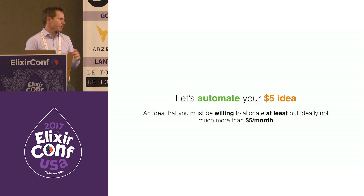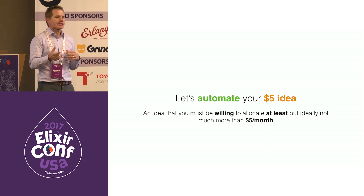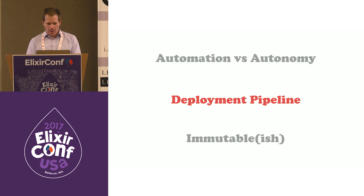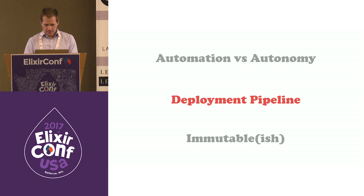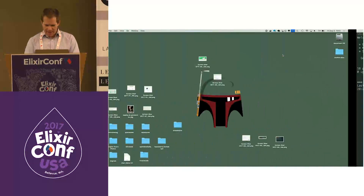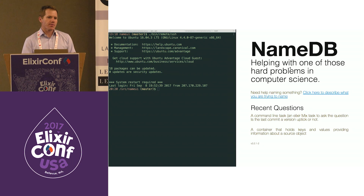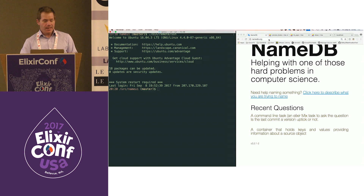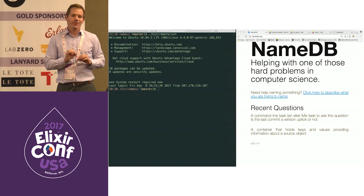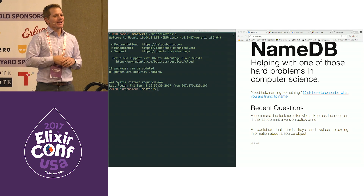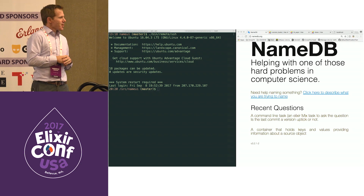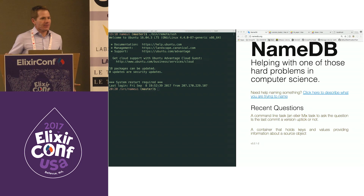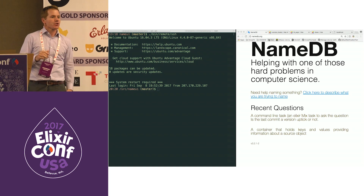We're going to automate our $5 idea. A $5 idea is something I'm willing to spend at least, but hopefully no more than, $5 a month to try out. Our $5 idea is solving one of those hard problems in computer science: naming things. It's a service that is live. SSL is unfortunately turned off — as part of preparing for this, I exhausted all my Let's Encrypt attempts. But the Phoenix app can tell if there's a cert involved or not.